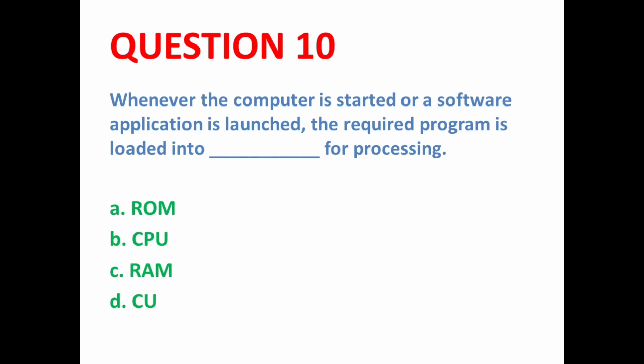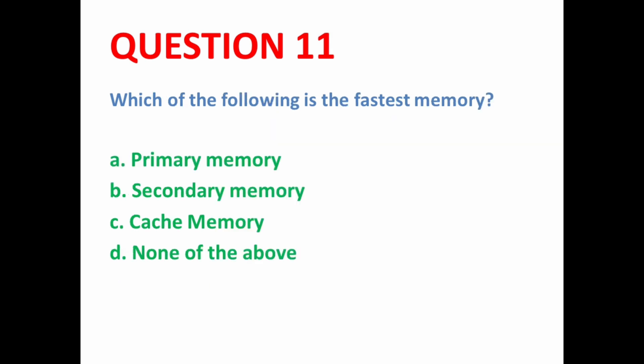Next MCQ: Whenever the computer is started or a software application is launched, the required program is loaded into dash for processing. Any program that needs to be processed is loaded into RAM. So here option C is the correct option.